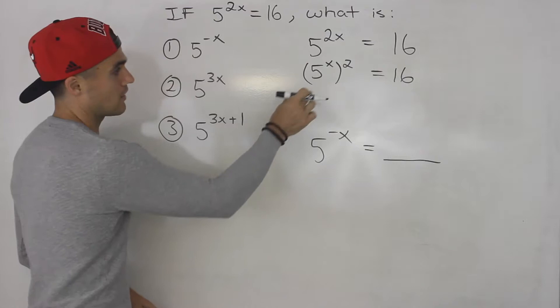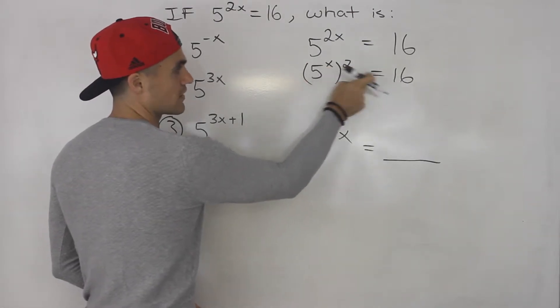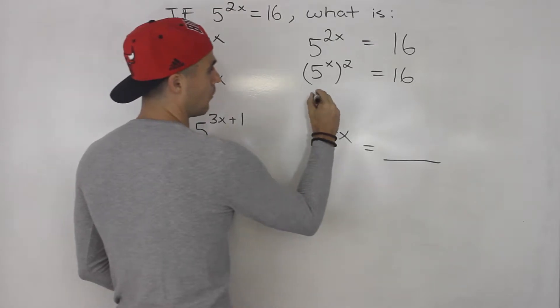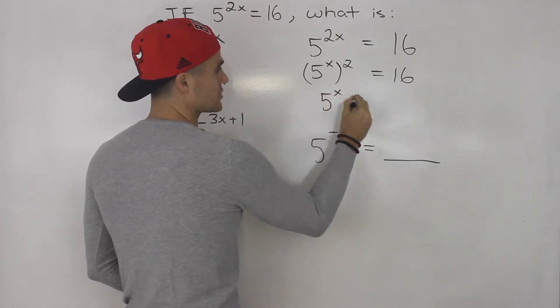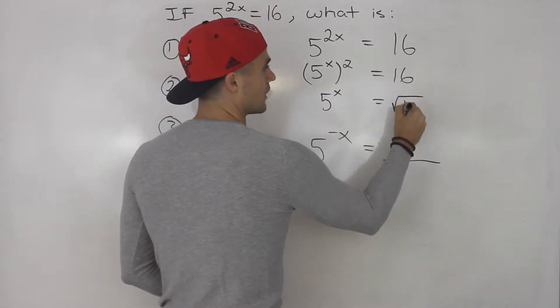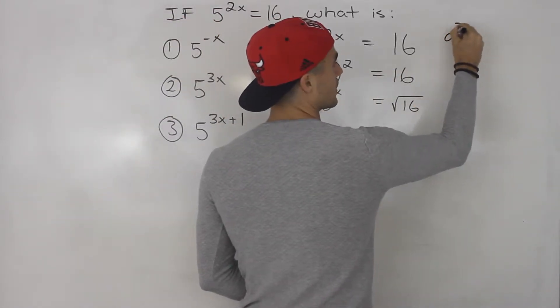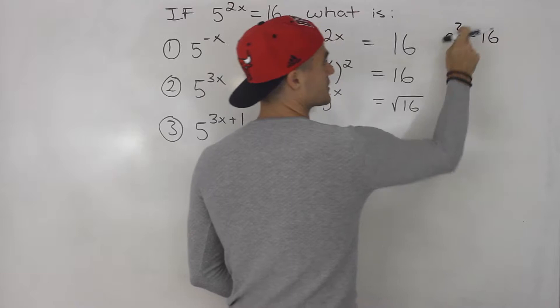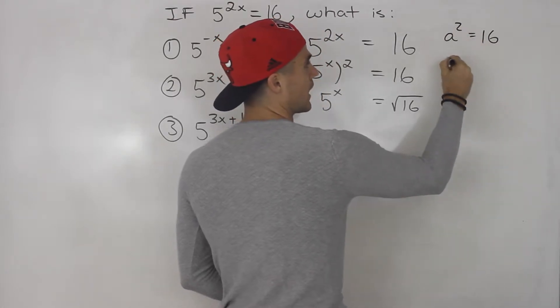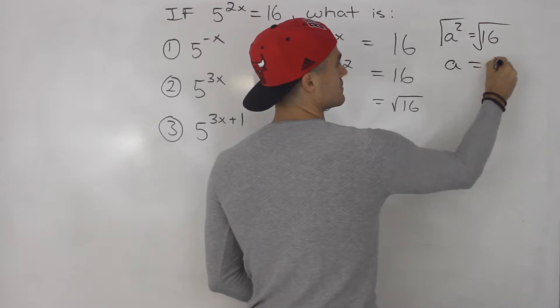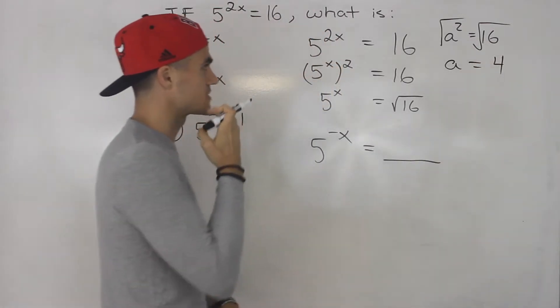So notice how an expression squared is equal to 16. So if we want to figure out what that expression is, we can just take the square root of 16. So for example, pretend that you had maybe a squared is equal to 16, right? Something squared is equal to 16. If you want to isolate for the a, you just square root both sides, and that would give you 4. Same thing here.